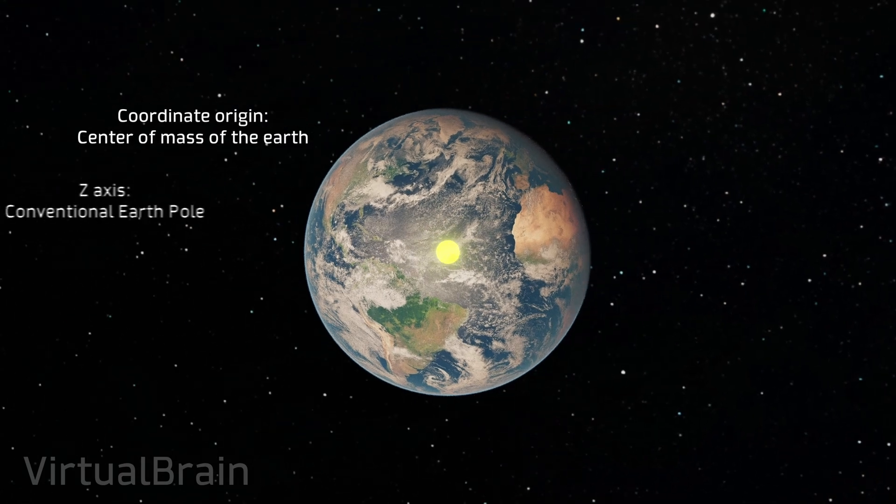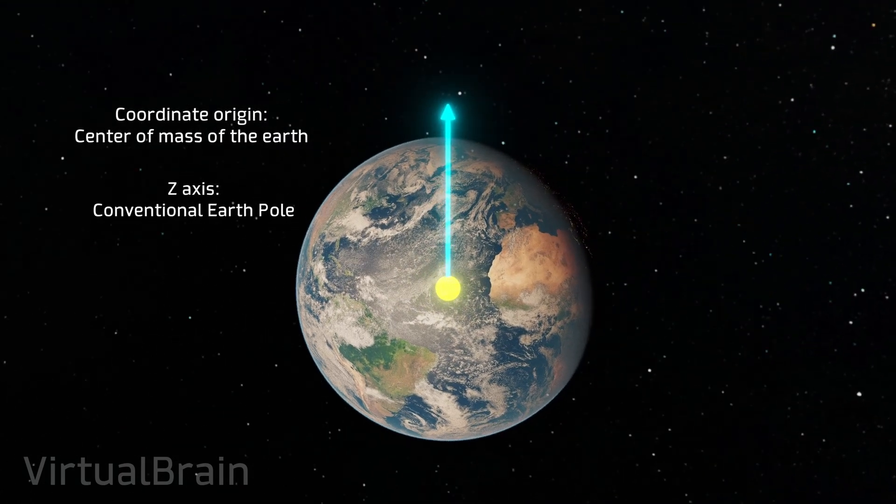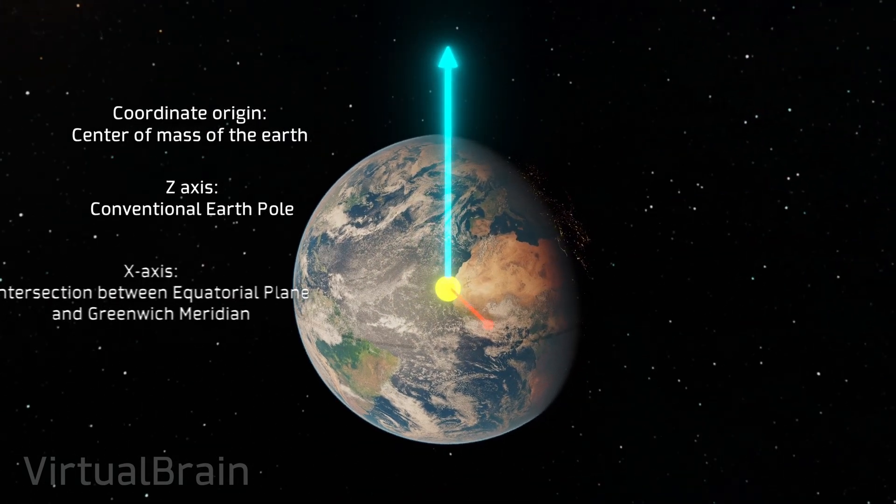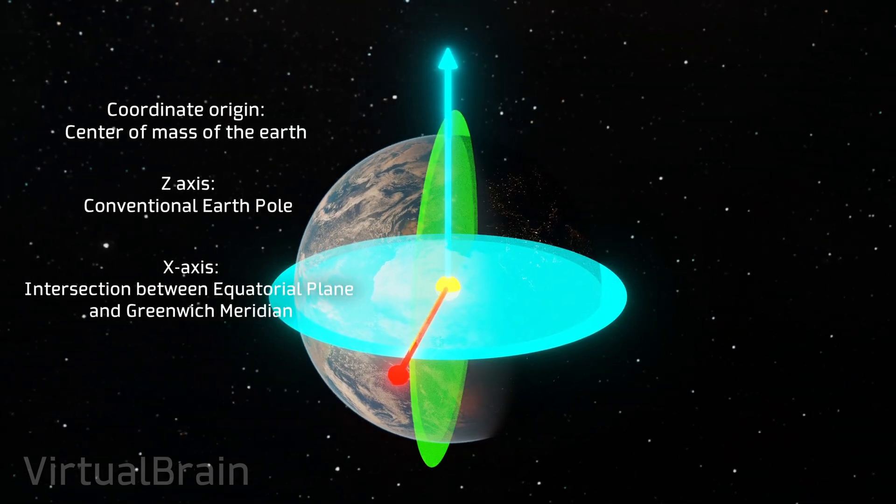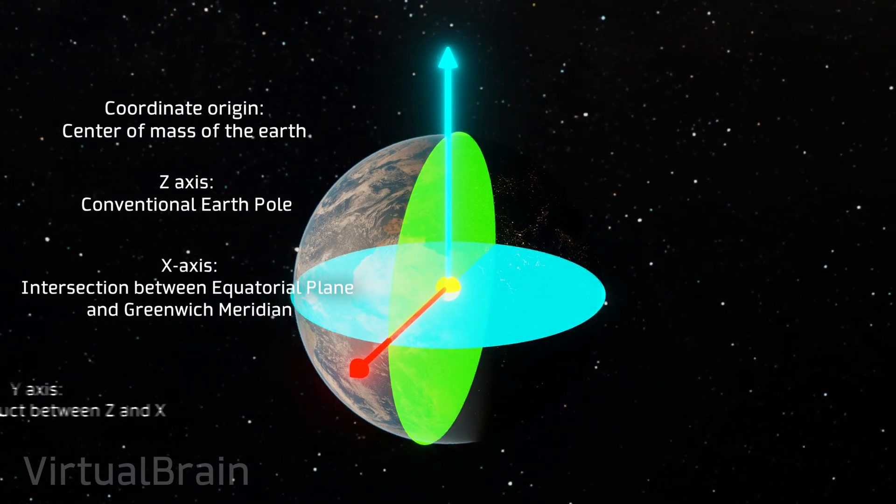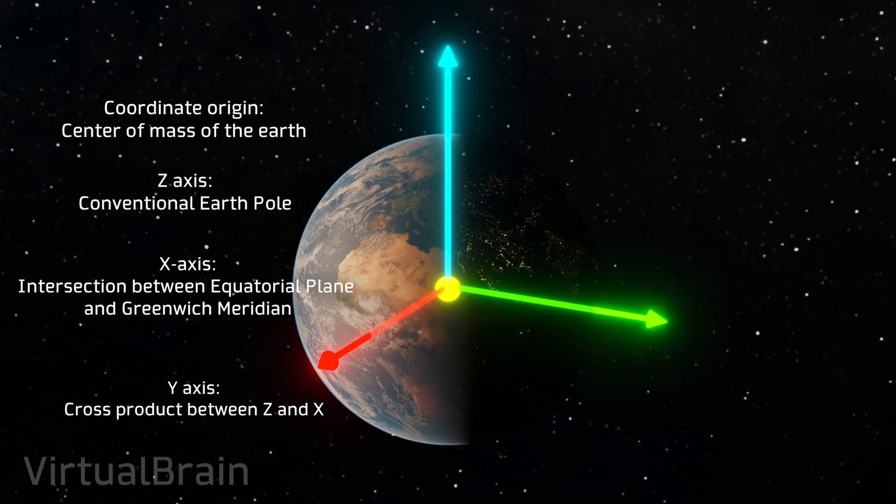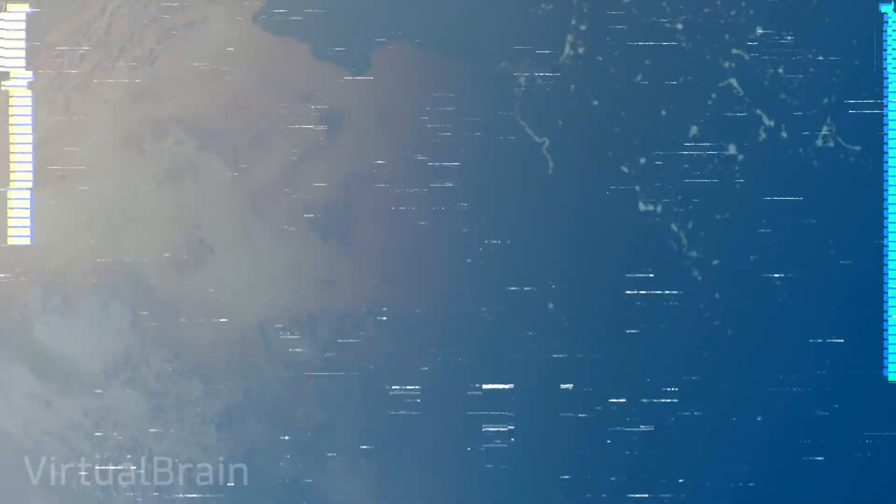The z-axis corresponds to the conventional Earth pole. The x-axis corresponds to the intersection between the equatorial plane of the conventional Earth pole and the Greenwich meridian. And finally, the y-axis corresponds to the cross product between the z-axis and the x-axis.